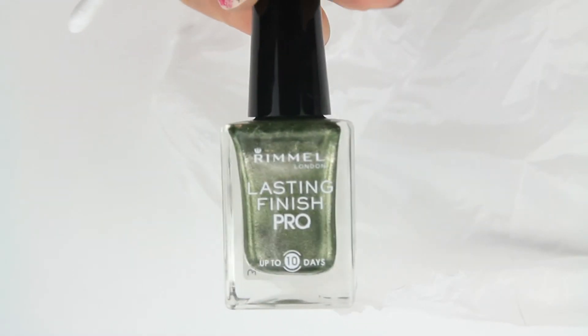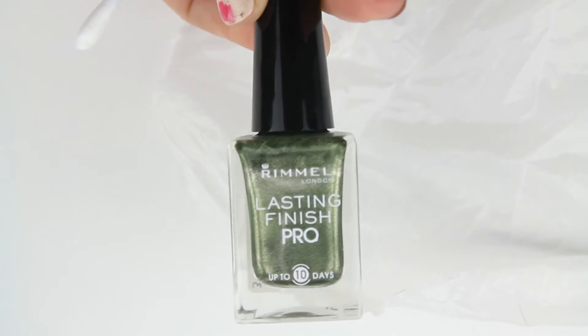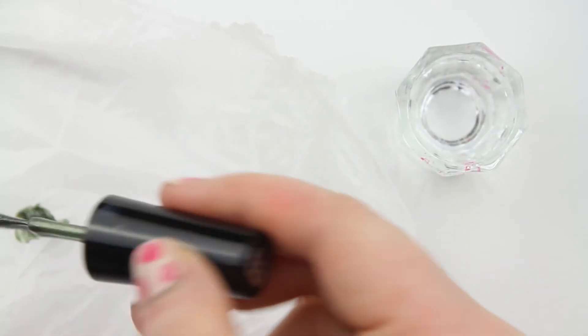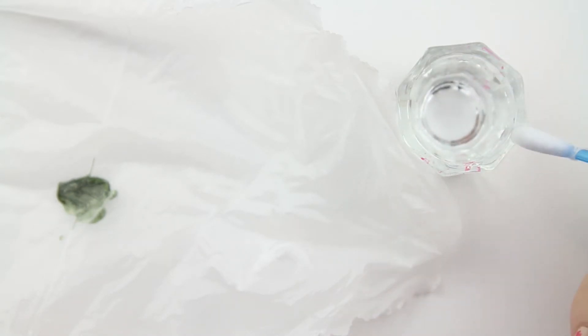I then began to do the leaves. I used Rimmel's Lasting Finish Pro in shade Rags to Riches, which has a nice shimmer to it. I did the exact same effect, applying it underneath the flower pink.